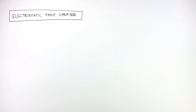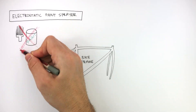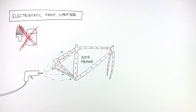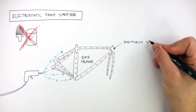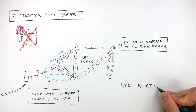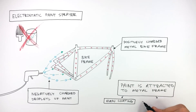An electrostatic paint sprayer is really useful when painting a bike frame. Using a paintbrush is not a good idea because the paint will not spread evenly. Instead, we use an electrostatic paint sprayer: the bike frame is given a positive charge, and the droplets of paint leaving the sprayer are negatively charged, so the paint is attracted to the metal frame. The advantages are an even coating and less paint wasted.